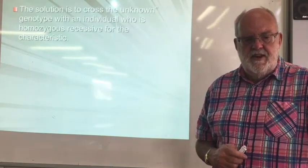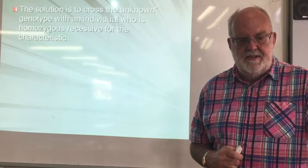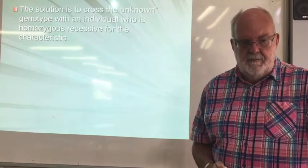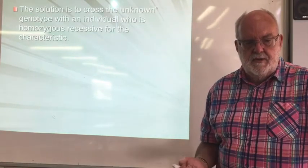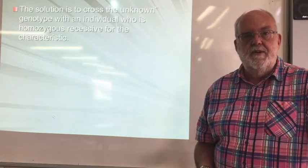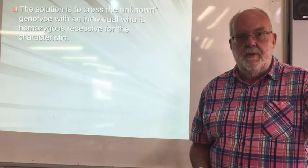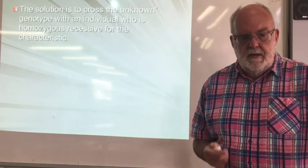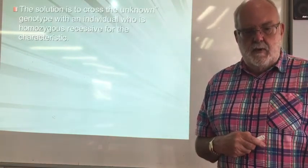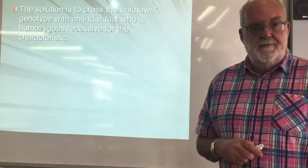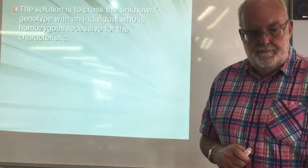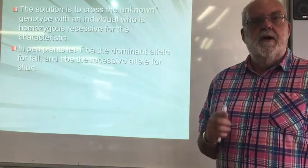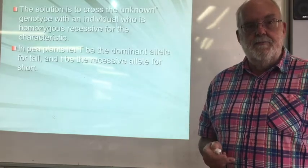Test crossing the unknown genotype with an individual who is homozygous recessive for the characteristic — that's basically the definition of how a test cross works. You've got the unknown genotype, so it's either going to be homozygous dominant or it's going to be heterozygous. If it's heterozygous it's got the potentially unwanted allele in the genotype. If you take that individual and cross it with a known homozygous recessive individual, you can work out whether the original parent was homozygous — which is what you want — or heterozygous, which perhaps you don't want.